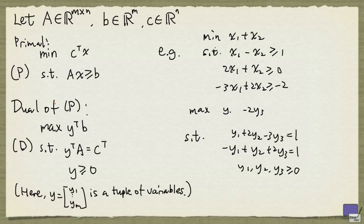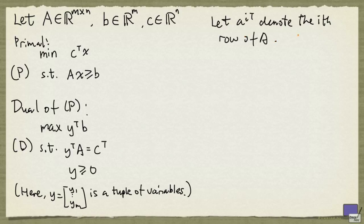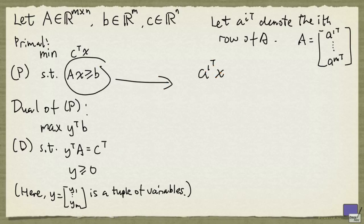Let's now look at the relationship between the primal and the dual problems. Suppose we have an x satisfying this, and a y that satisfies this. So we're going to let ai transpose denote the ith row of a. So a looks like this.